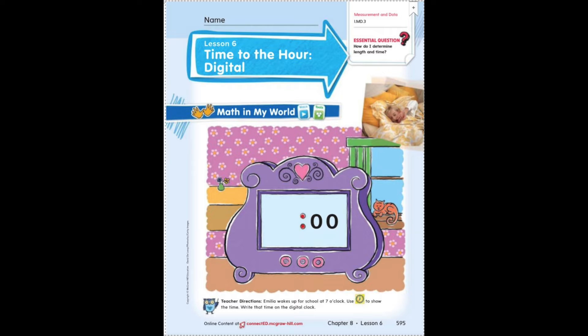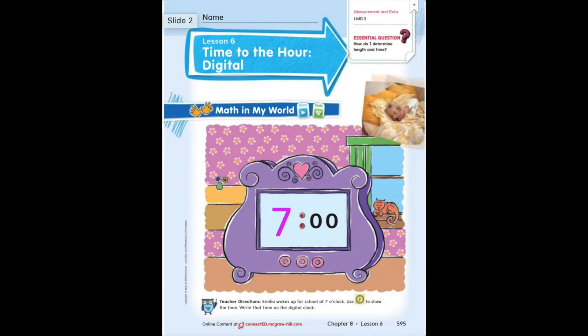So if it is seven o'clock when she wakes up, you are going to be adding a number to the hour side of the digital time. The hour side is on the left side. So as you can see, I added a seven to the hour side of that digital time to show seven o'clock. Does this look like time you might see on a cell phone or maybe on your stove at home?